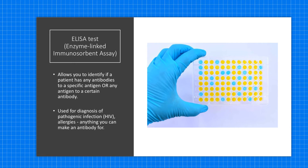These techniques can also be used in what we call an enzyme-linked immunosorbent assay — you just need to know it as the ELISA test. This is really good for diagnosis of disease, for example HIV. You can identify whether a patient has any antibodies to a specific antigen, or any antigen to a certain antibody — so you can diagnose HIV, allergies, or anything you can make an antibody for. In terms of viral infection, you will produce antibodies, and therefore you can identify whether you've had a particular viral infection.